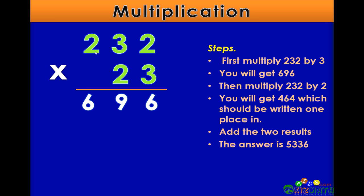Now we will take 232 multiplied by 2. But remember, you must move over one space. 2 times 2 is 4. 2 times 3 is 6. And 2 times 2 is 4.